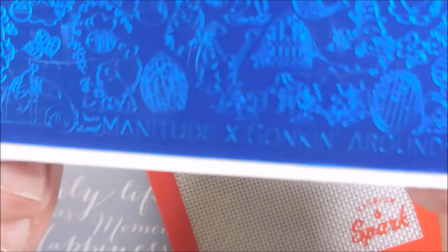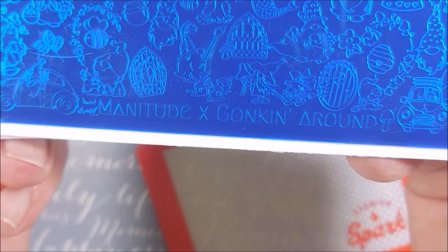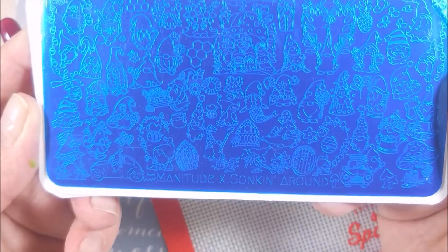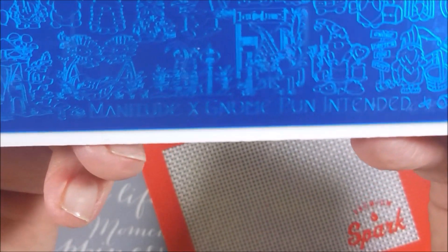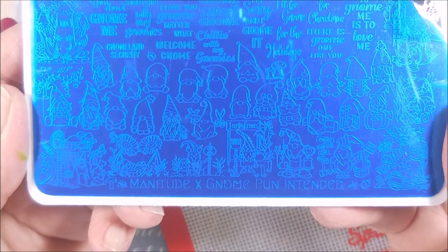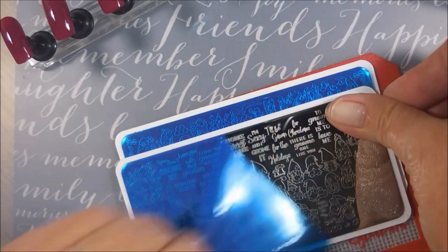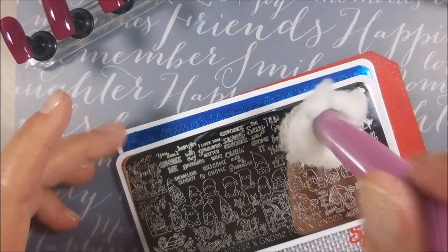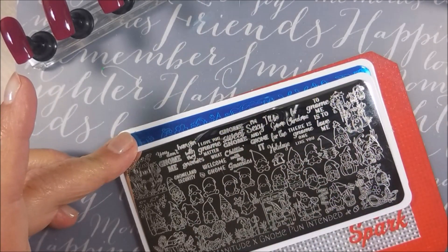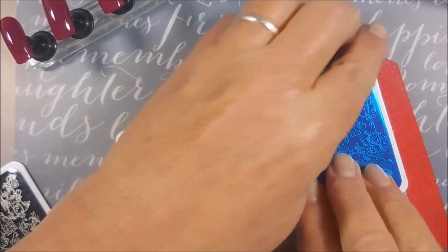You know, so I'll be using this Manitude X Gonkin' Around Plate. It's got a whole bunch of gonks or whatever. And this one is Gnome Pun Intended, also by Manitude. I'm going to get these plastic films off of these and wipe them down with a little bit of acetone and alcohol real quick.